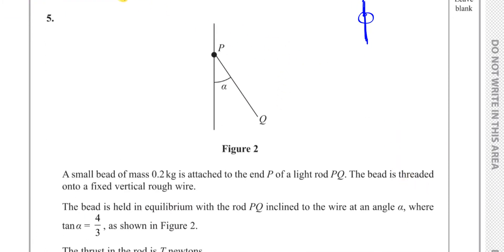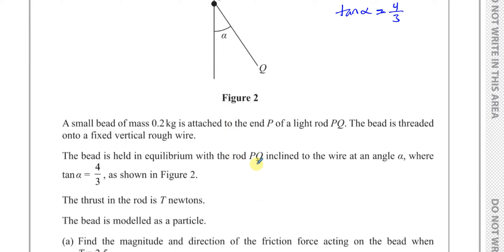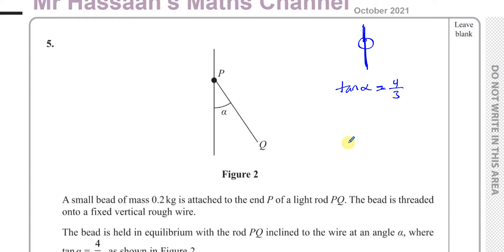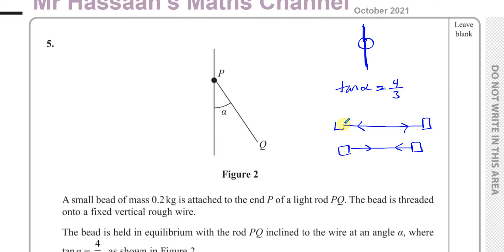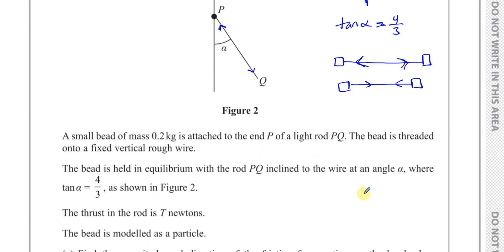The tangent of angle α is four over three. The thrust in the rod is T newtons. A rod can have tension or thrust. Thrust always points outwards — if two objects are being pushed together, the rod is compressed and the thrust acts outwards. So the force acting on this bead from the rod is acting outwards in that direction.